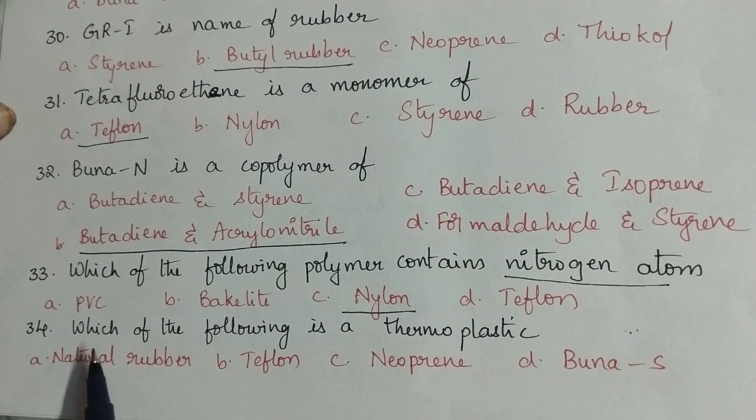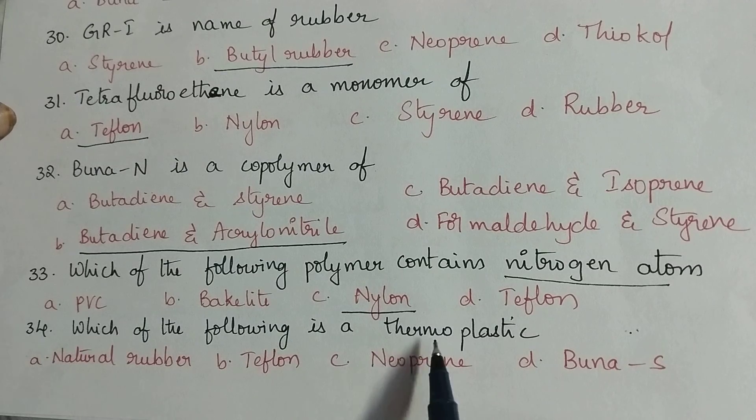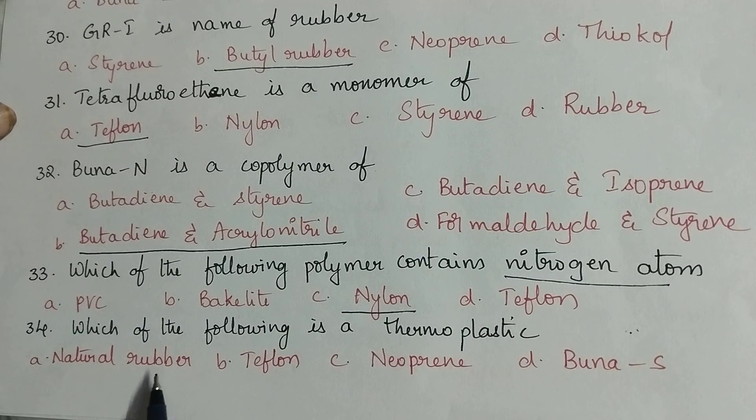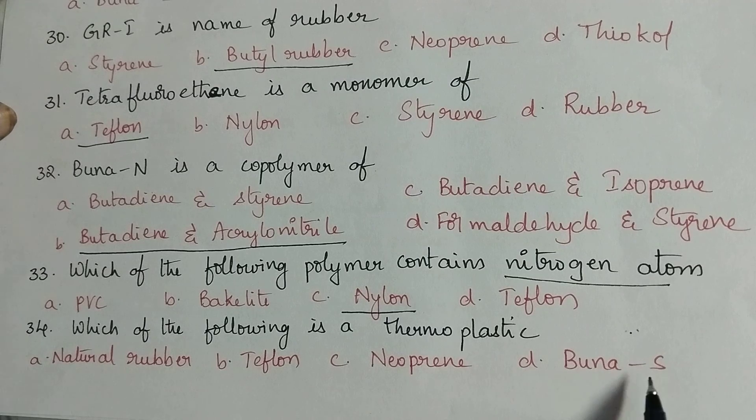Which of the following is a thermoplastic? Natural rubber, neoprene, Buna-S comes under elastomers, so Teflon is the thermoplastic.